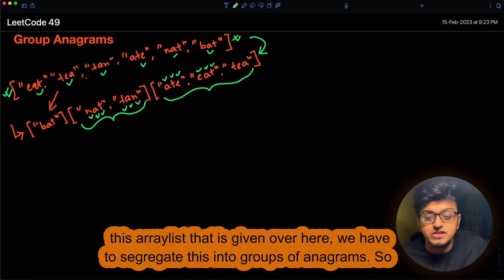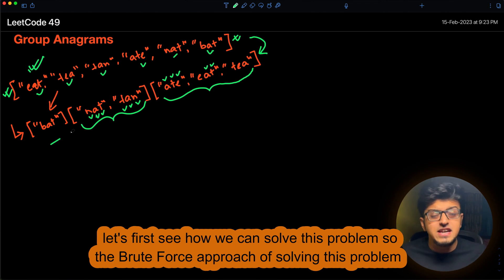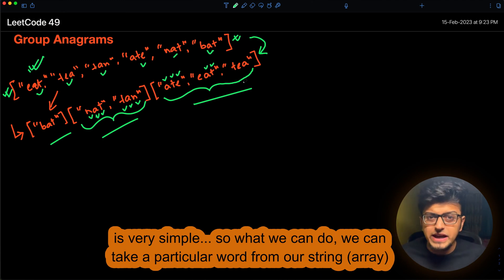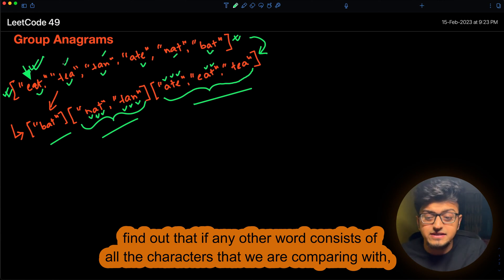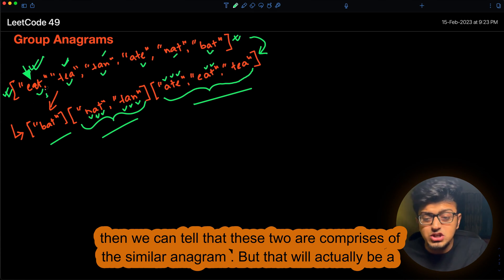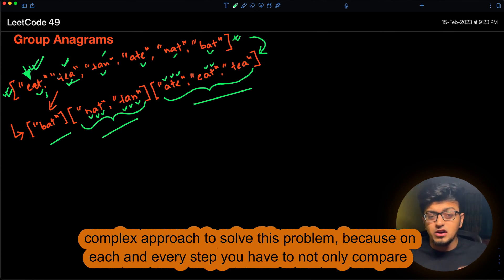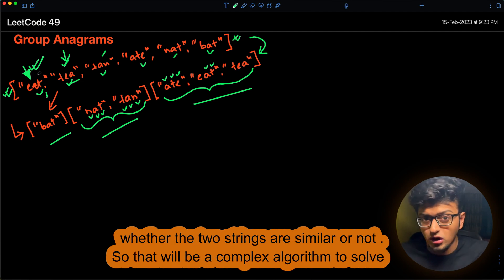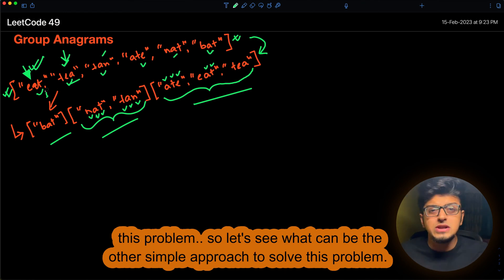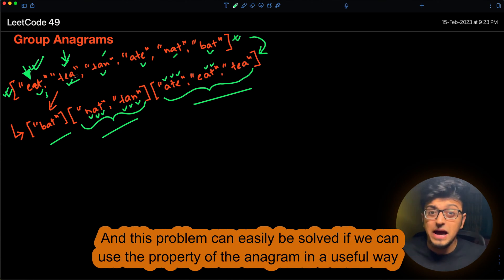Based on this array list, we have to segregate the strings into groups of anagrams. The brute force approach is straightforward: take a particular word and compare it with every other word in the array. If another word contains all the same characters, they belong to the same anagram group. However, that is a complex approach because it requires two for loops to compare strings, plus logic to check whether two strings are similar.